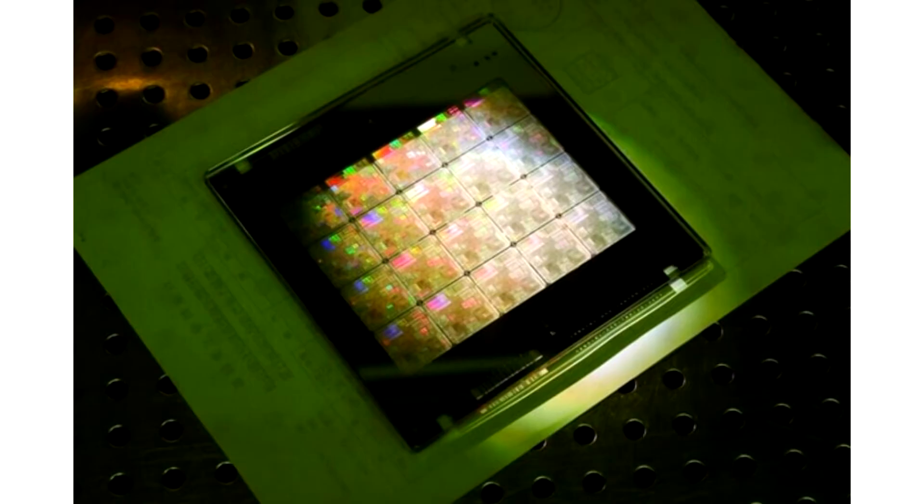SMIC's 7nm class N+1 foundry node going live by Q4 2020. China's state-backed SMIC, Semiconductor Manufacturing International Corporation, has set an ambitious target of Q4 2020 for its 7nm class N+1 foundry node to go live, achieving small-scale production, according to a CNTech Post report.